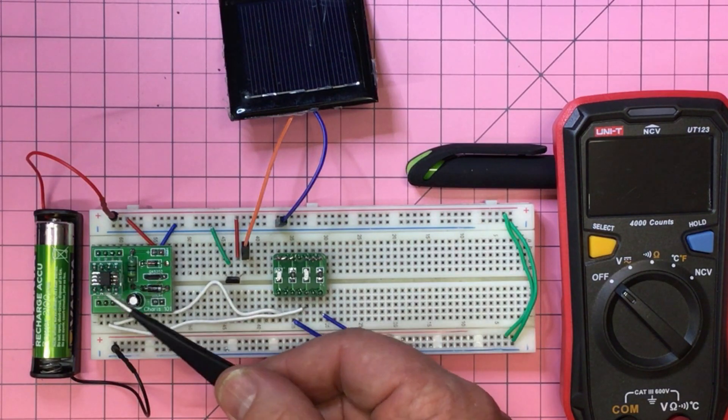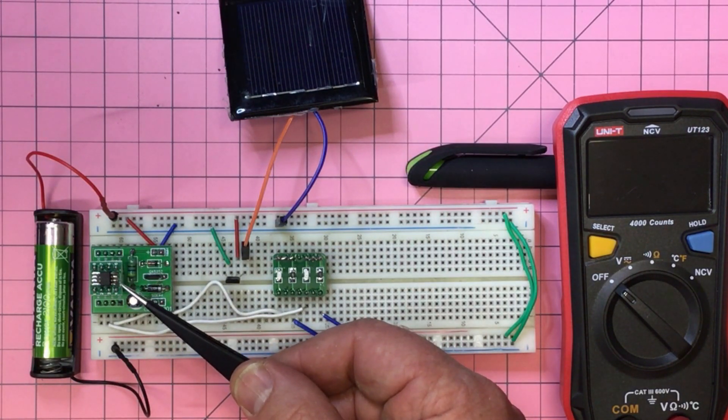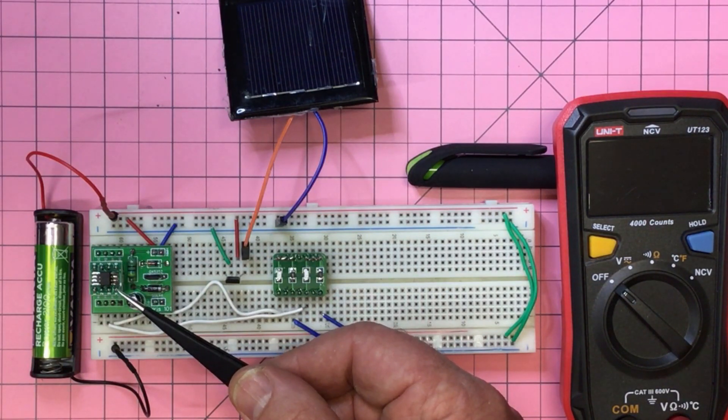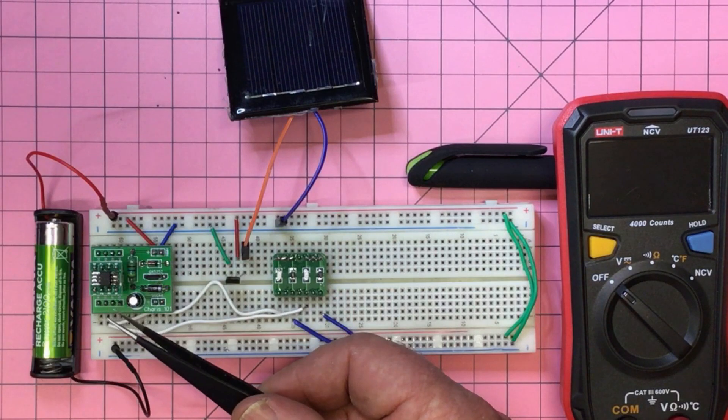So according to the data sheet, that's very little juice going to the ATiny13. But of course the ATiny13 itself is only running at 128 kilohertz and most of the time it's asleep in the program that I've got.